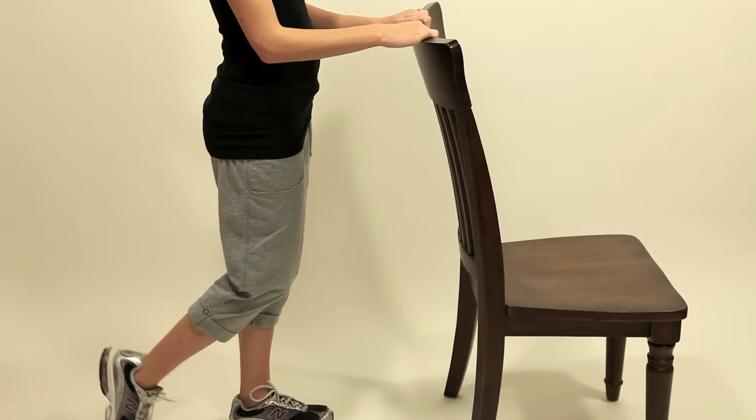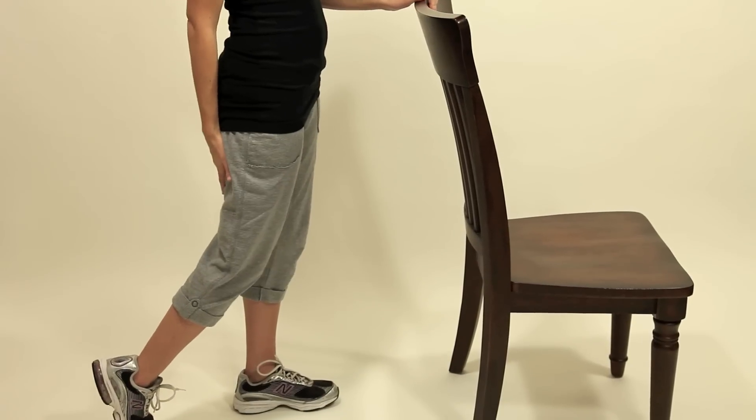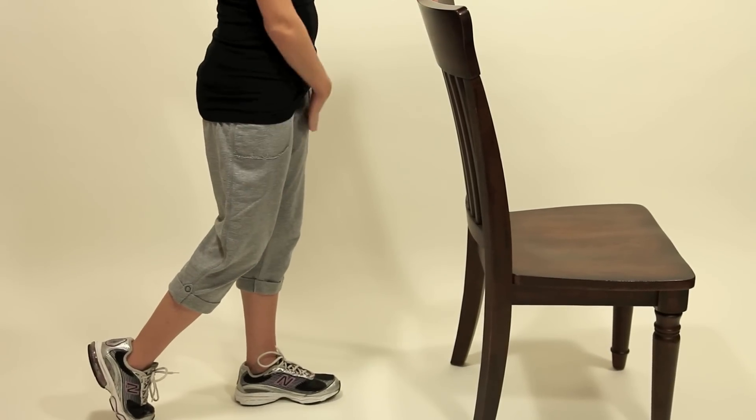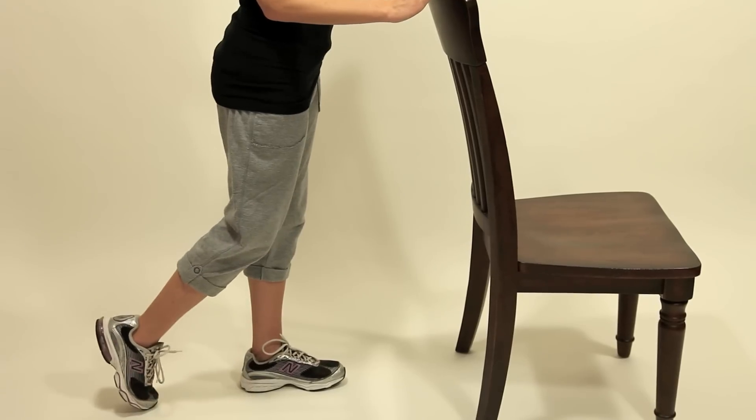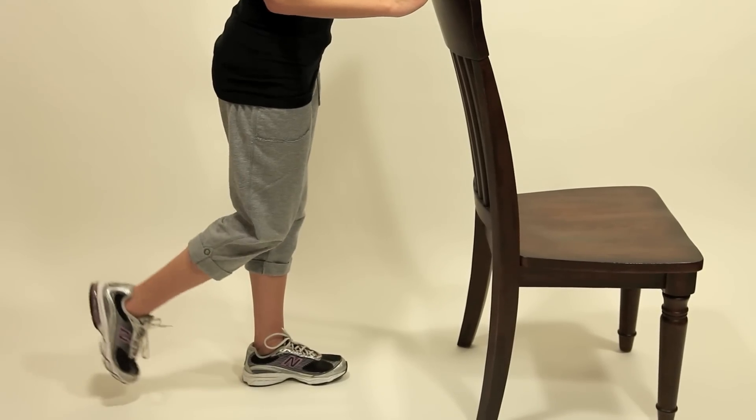You're going to hold on there. You're going to bend the knee of the leg that you're trying to strengthen, keeping your thighs parallel to each other. You're going to just bend your knee up like this. You're kicking your bottom.